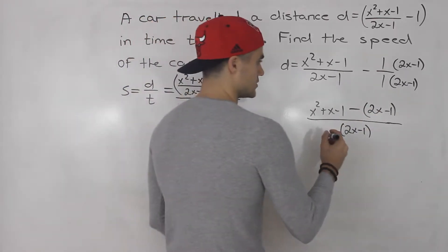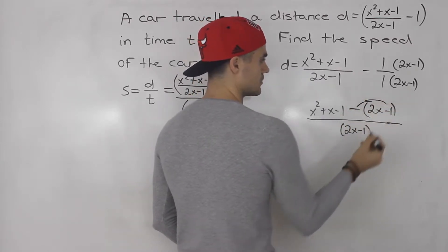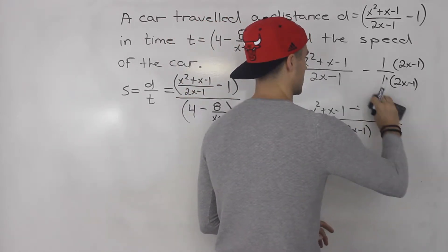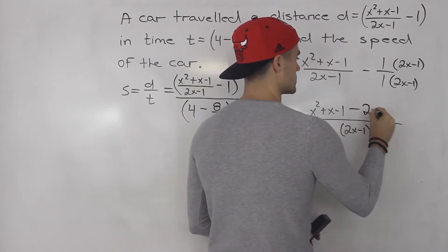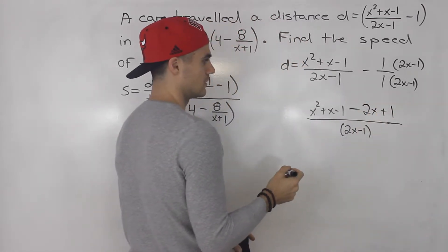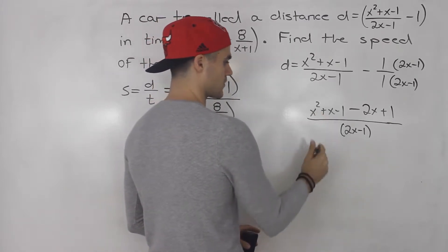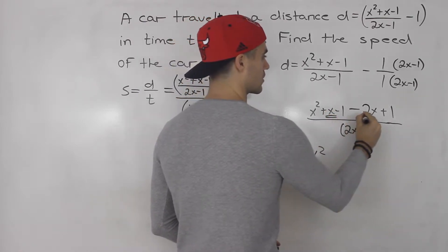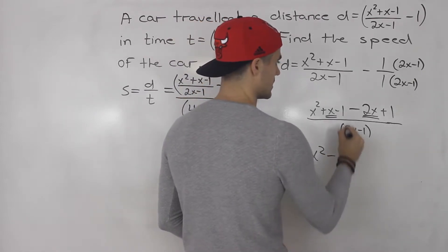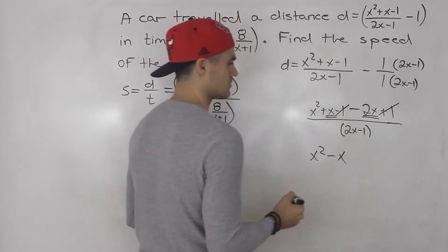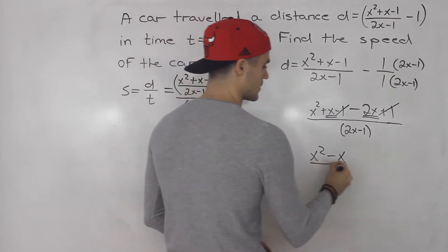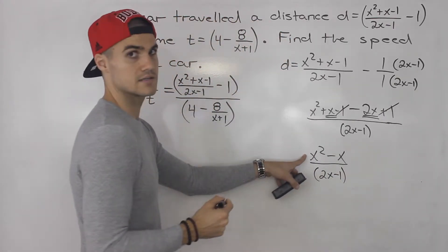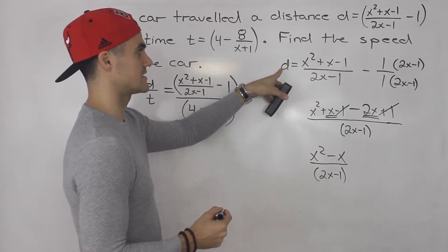Now simplify the top by distributing the negative inside the bracket, giving minus 2x plus 1. So we have x squared, then x minus 2x gives minus x, and negative 1 plus 1 nets out to 0. That gives us x squared minus x over 2x minus 1. That is the simplified distance expression — we took that original expression and made it into one fraction.